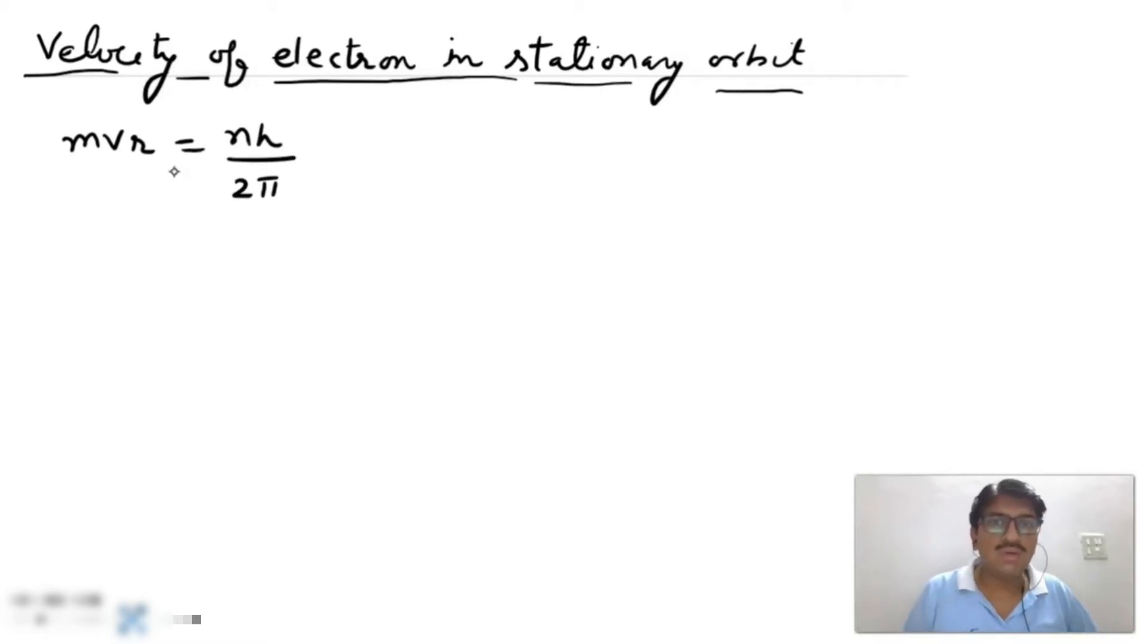We have discussed about it in previous videos and here we can write V is equal to nh upon 2π MR, and this R represents the radius of orbit and we have derived the formula of radius in previous video.